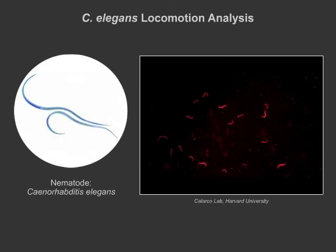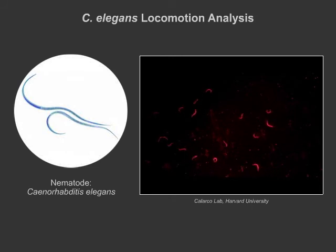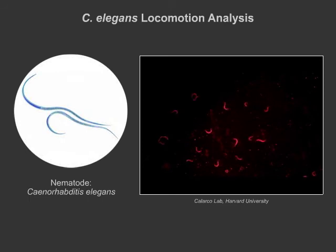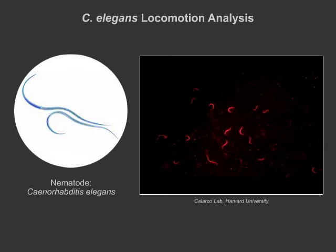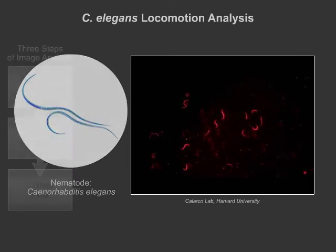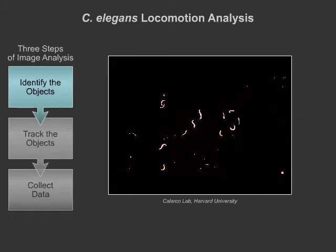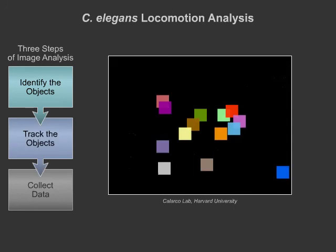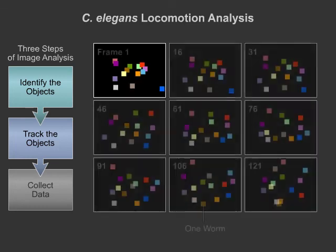Now, let's talk about the worm C. elegans. C. elegans usually moves in a sine wave pattern, as shown above. However, mutations in certain gene regulatory networks can cause uncoordinated behavior, causing worms to coil, twitch, or not move at all. We need a way to quantify this motion. We first convert the image into a binary matrix such that each pixel is either part of a worm (white) or part of the background (black). We then mark the center of each worm, as shown in this visualization, where each colored box represents a worm in a frame.